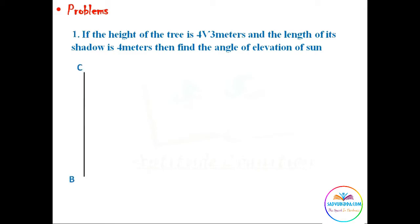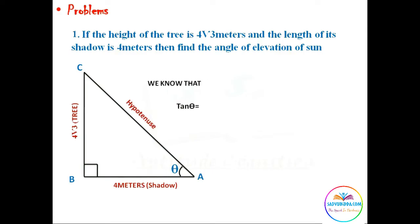If you join A and C, they will get angle theta. As we know, in a right angle triangle, tan theta equals opposite by adjacent. Here we know that opposite side is a tree which is four root three meters, and adjacent side is four meters.